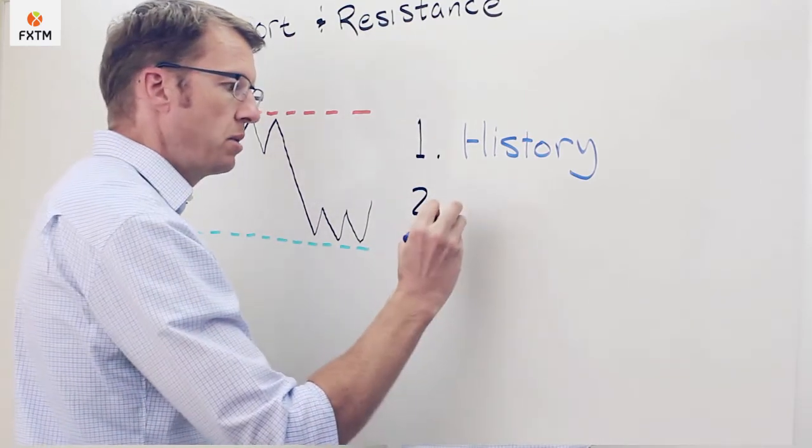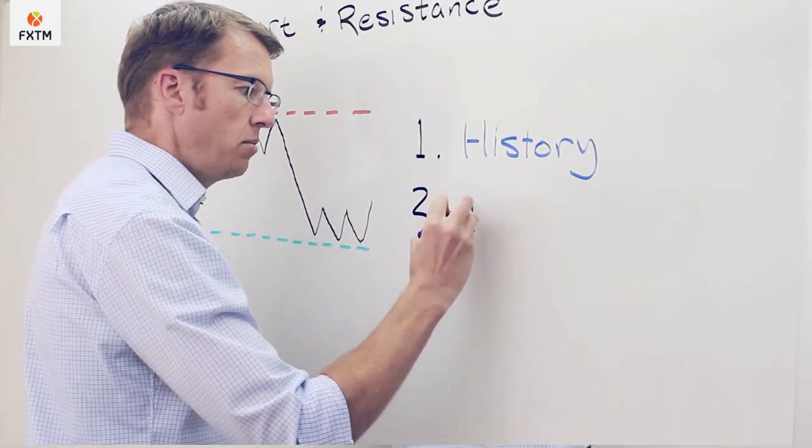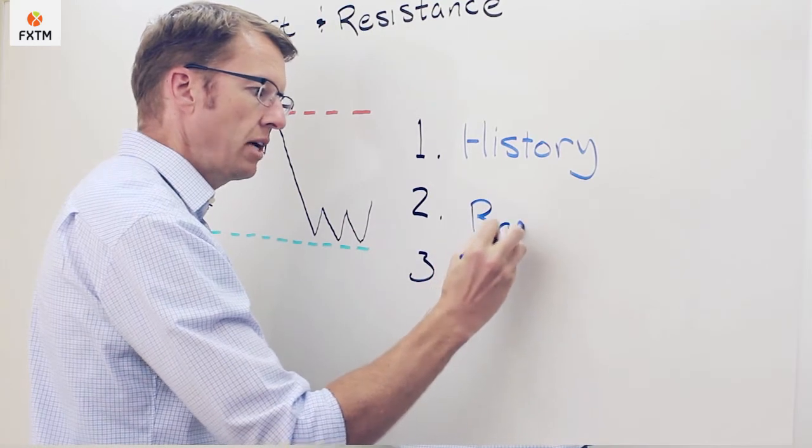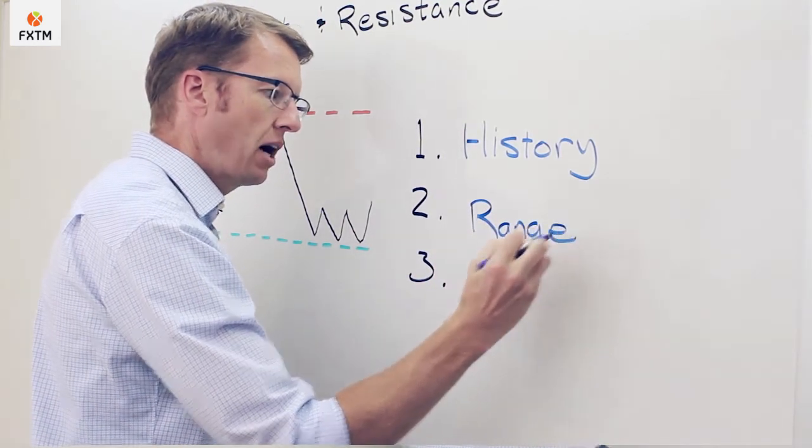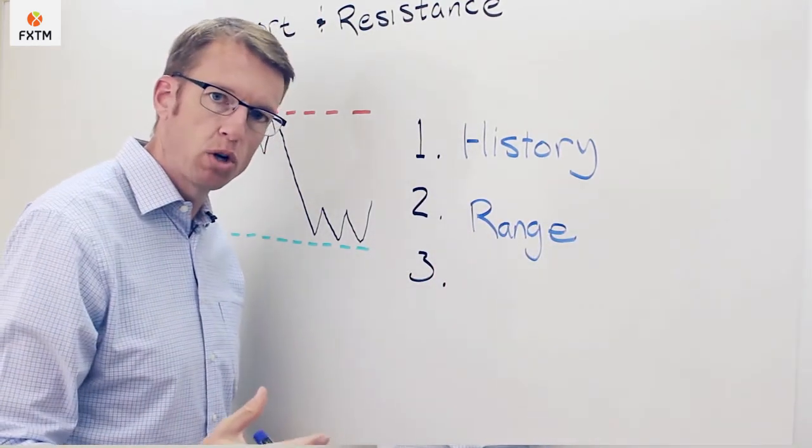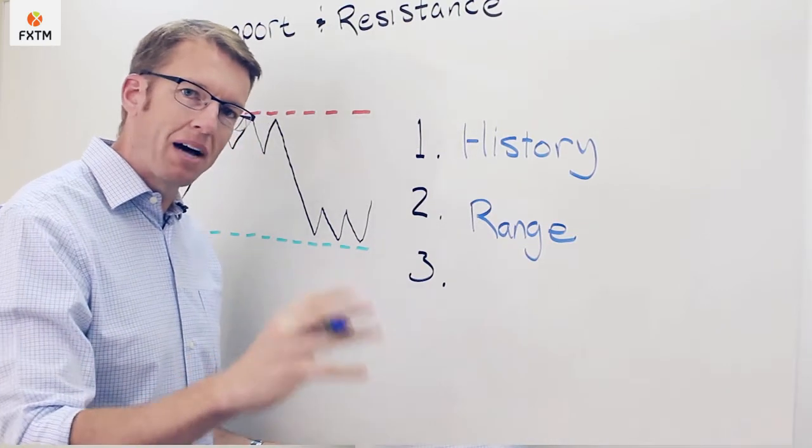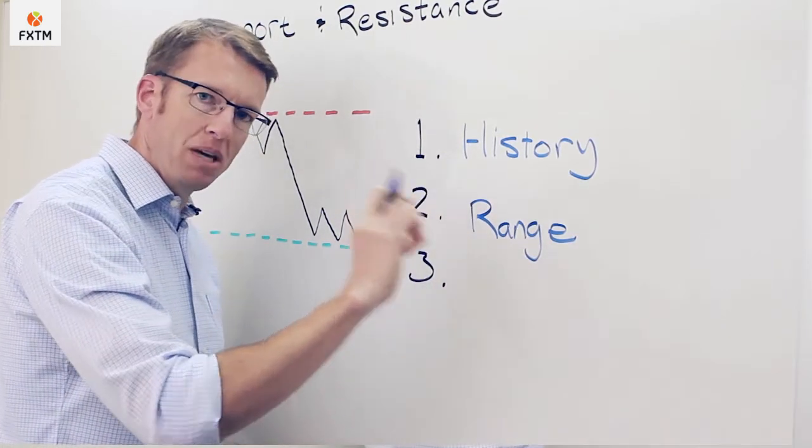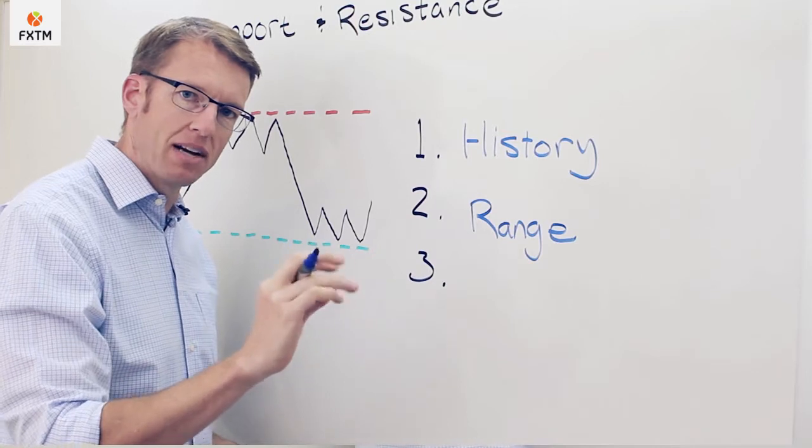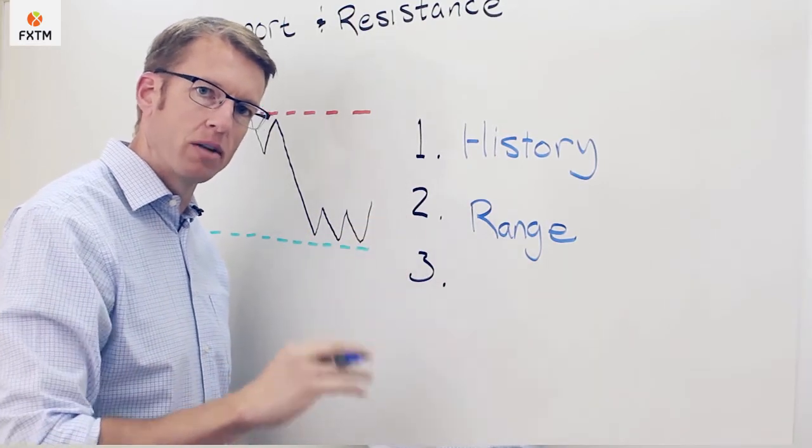Number two is going to be these levels are more of a range. So inevitably we have to assign some kind of a price level to support or resistance, but we should think about it as not a to-the-pip point at which the price is not likely to go beyond or go below.